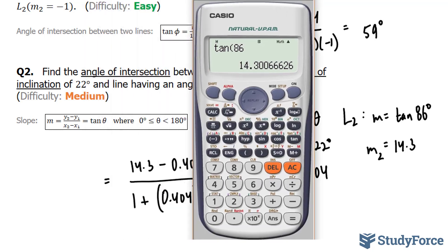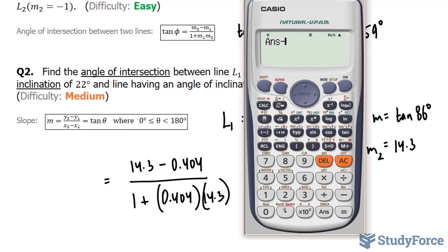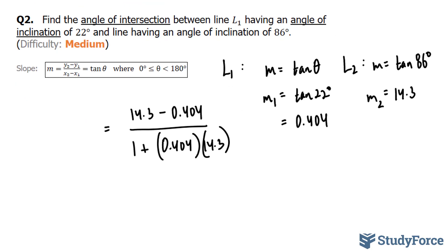So let's do this. This number, minus 0.404, divided by 1 plus the product of these two, 0.404 times 14.3, close bracket, close bracket, and we end up with 2.05. 2.05 represents the ratio for tangent phi.